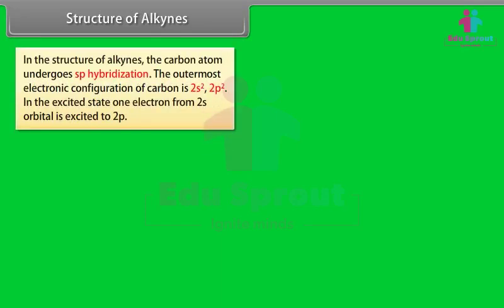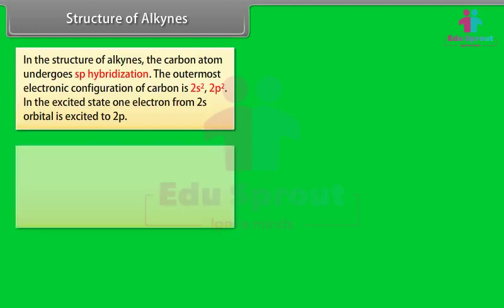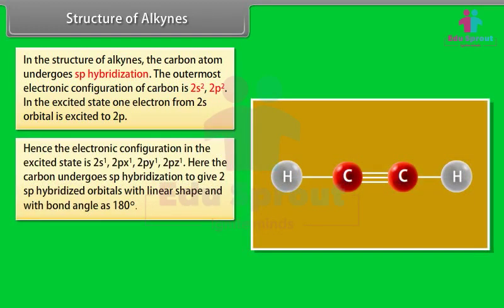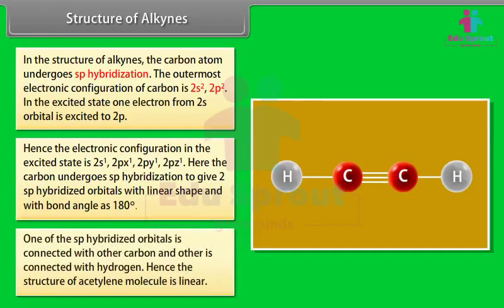Structure of Alkynes: In alkynes, the carbon atom undergoes sp-hybridization. The outermost electronic configuration of carbon is 2s2, 2p2. In the excited state, one electron from the 2s orbital is excited to 2p, giving 2s1, 2px1, 2py1, 2pz1. The carbon undergoes sp-hybridization to give 2 sp-hybridized orbitals with linear shape and a bond angle of 180 degrees. One of the sp-hybridized orbitals connects with another carbon, and the other connects with hydrogen. Hence, the structure of the acetylene molecule is linear.